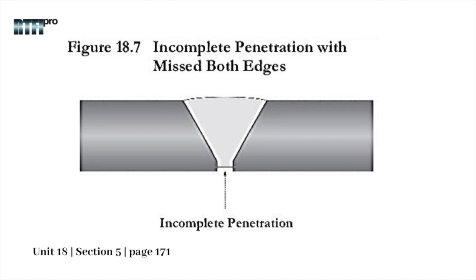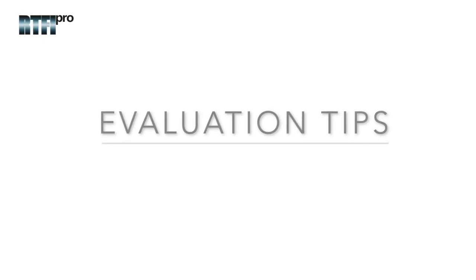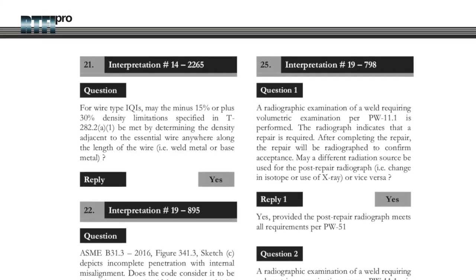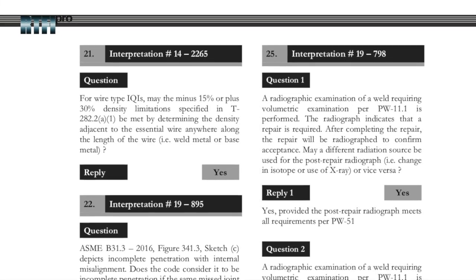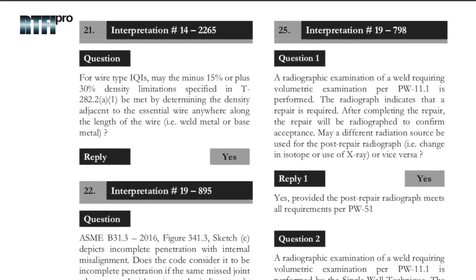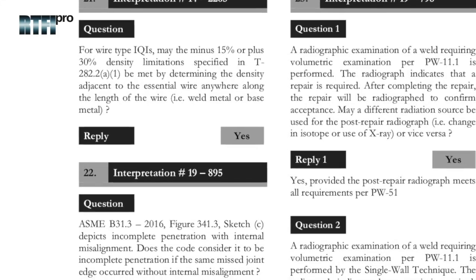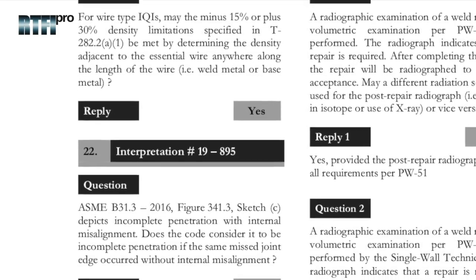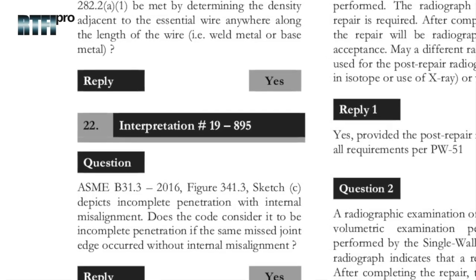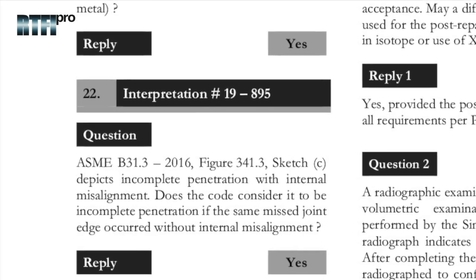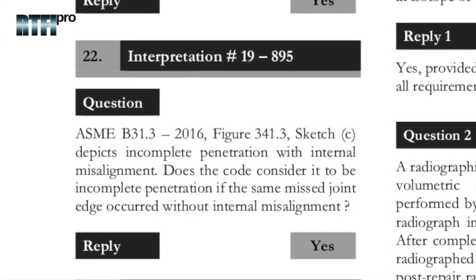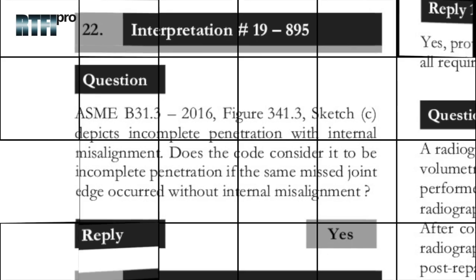Incomplete penetration usually has a very straight and defined location in the root. Evaluation tips: the interpretation of incomplete penetration is covered in ASME inquiry number 22, section 6, unit 20 of the book.